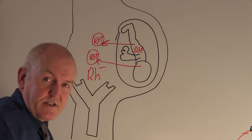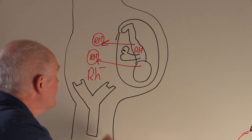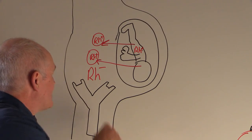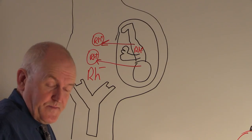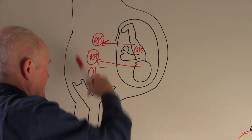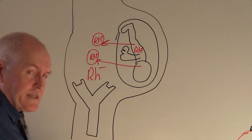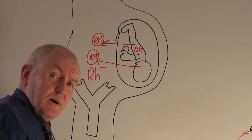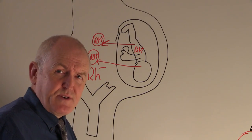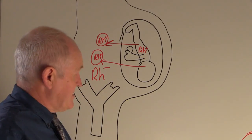The Rhesus positive baby has already been delivered safely. But the mother is now sensitized to the Rhesus factor — she now has Rhesus factor antibodies because of the fetomaternal haemorrhage. That first baby is born fine, but the mother can become pregnant a second time. With a Rhesus positive father, it's likely that another Rhesus positive fetus will result.